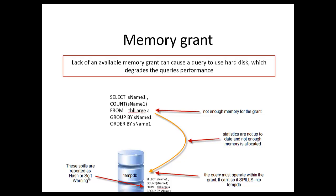These spills are reported as hash or sort warnings. In the next video, I'm going to walk you through how this process works in relation to the GROUP BY and ORDER BY, how it looks in terms of the code when we see a spill and when we see these warnings, and hopefully what we can do to remedy that. So hopefully this was useful information on what a memory grant is and how it causes spilling into tempdb. Thanks for watching.